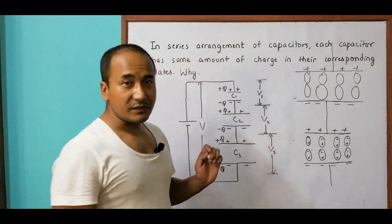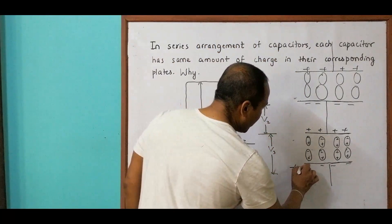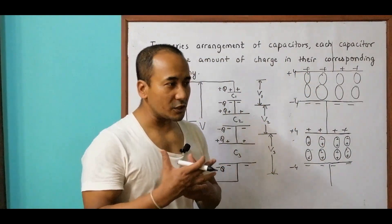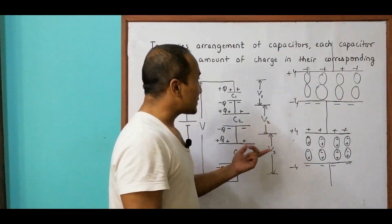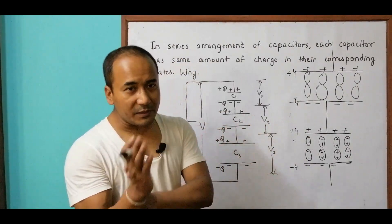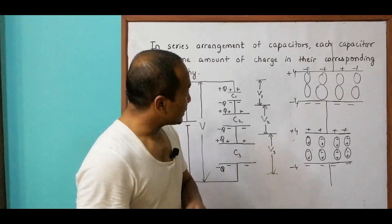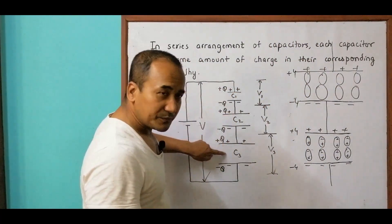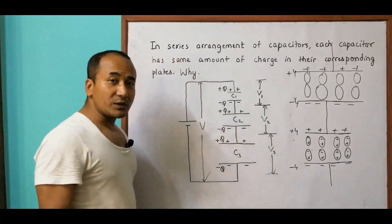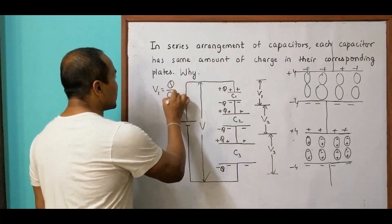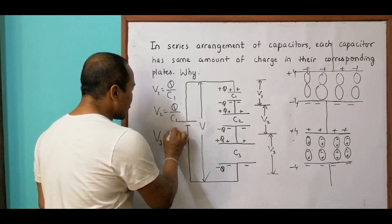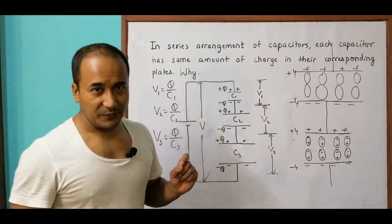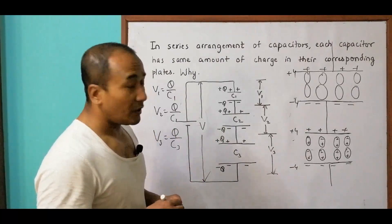Whatever the number of capacitors connected in series, the same thing happens — the charge is −Q, +Q, −Q, +Q on each successive plate. It cannot be otherwise, because induction demands that when one end becomes positive, the other must become negative. That's why all capacitors carry the same charge Q. Since the capacitances C1, C2, C3 are different but Q is the same, the potential differences will be different: V1 = Q/C1, V2 = Q/C2, V3 = Q/C3. That's how all capacitors in series have the same charge.